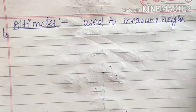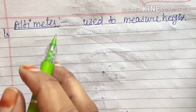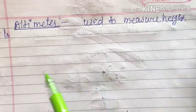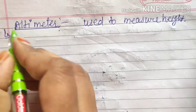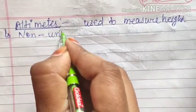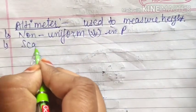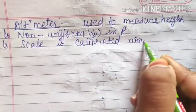When you solve numericals, you will clearly see that when pressure decreases by a certain amount, there is a corresponding increase or decrease in height. From there you can relate pressure with height. The altimeter works on non-uniform decrease in pressure, and its scale is also calibrated non-uniformly.